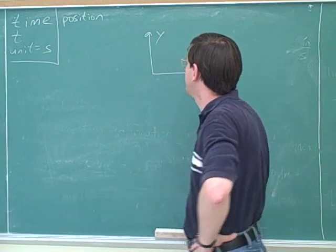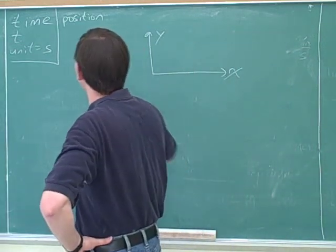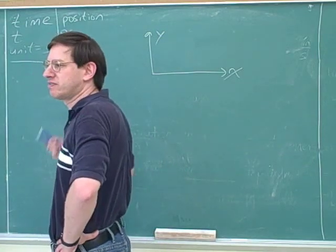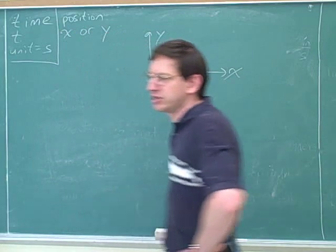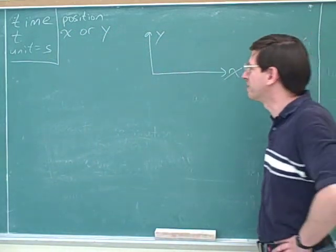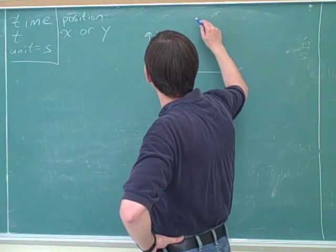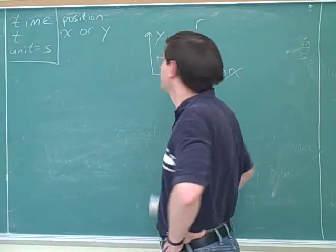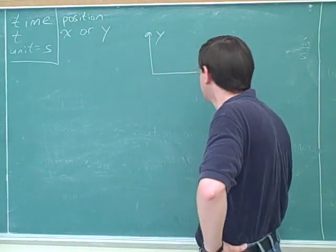Now, we're just going to be dealing right now with one-dimensional motion. So if we're dealing with one-dimensional horizontal motion, it would be natural to use x for position. Or if you're dealing with one-dimensional vertical motion, it would be natural to use y for position. Next week, when you do two-dimensional motion, you're going to be using r for position.